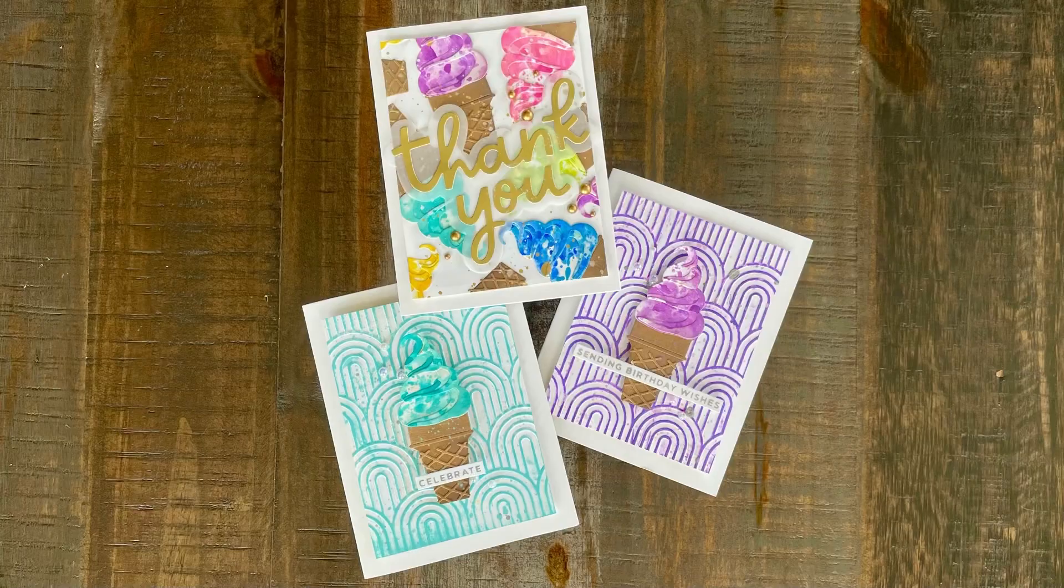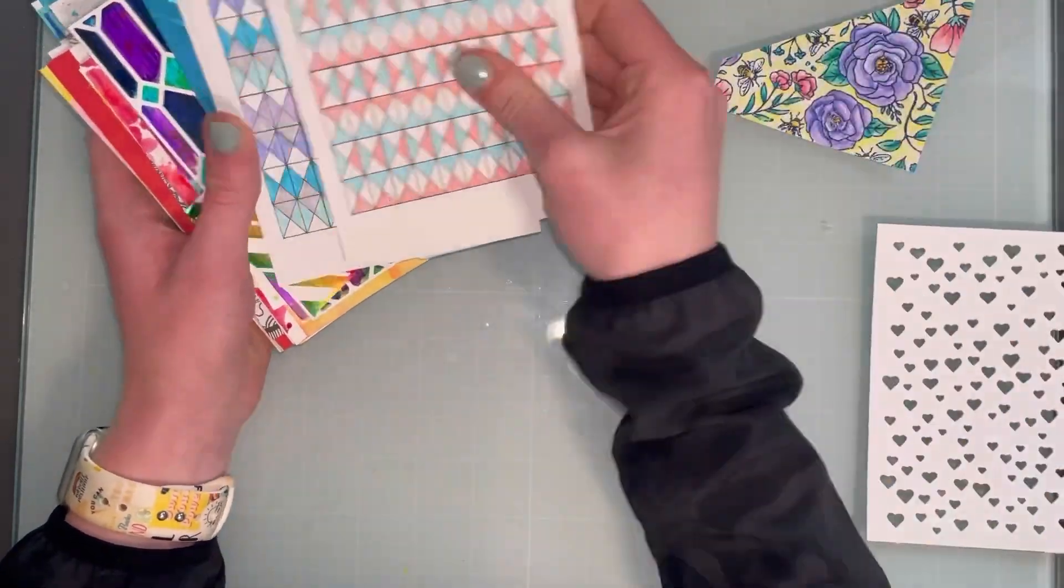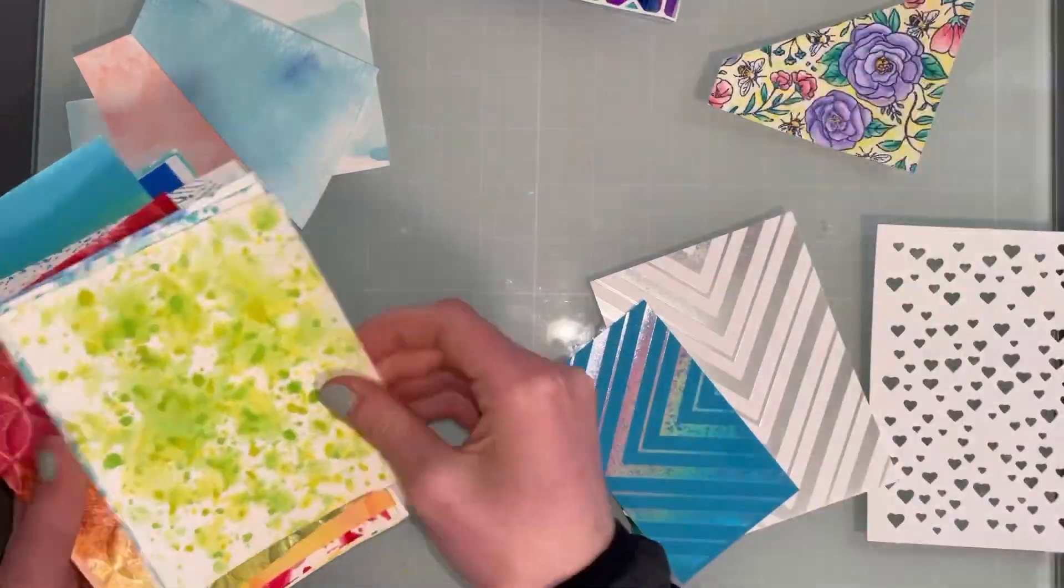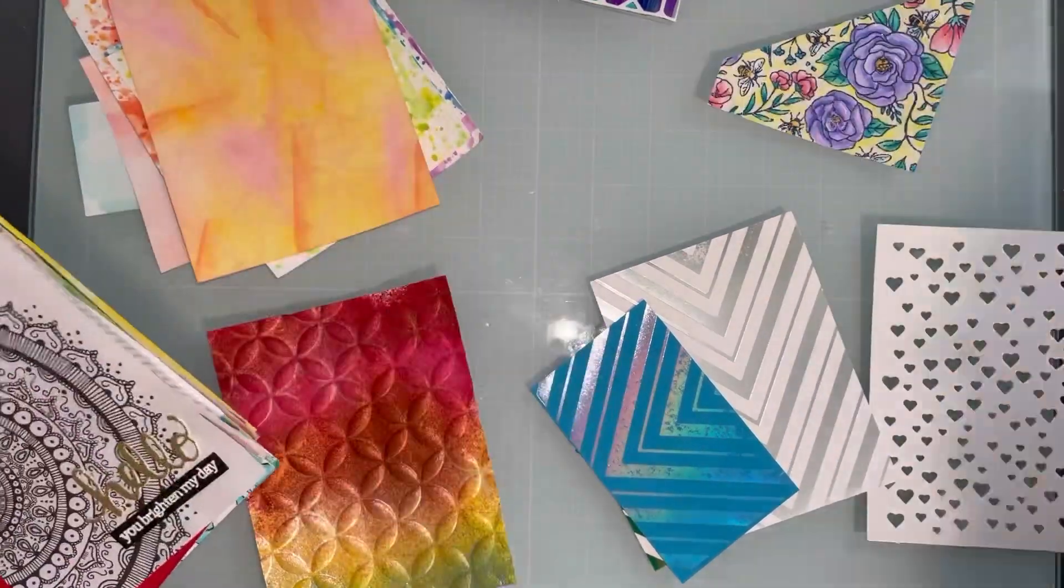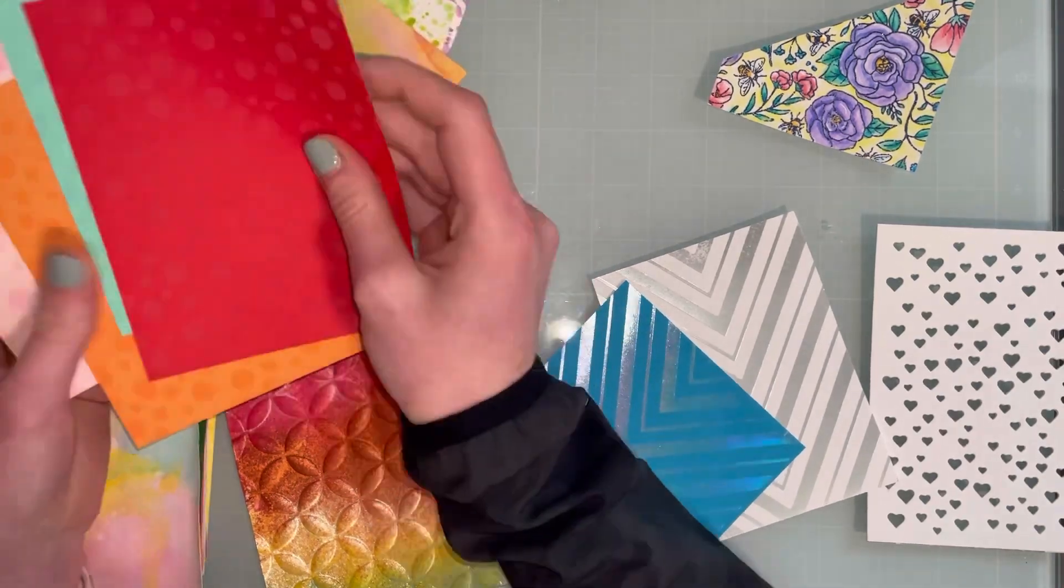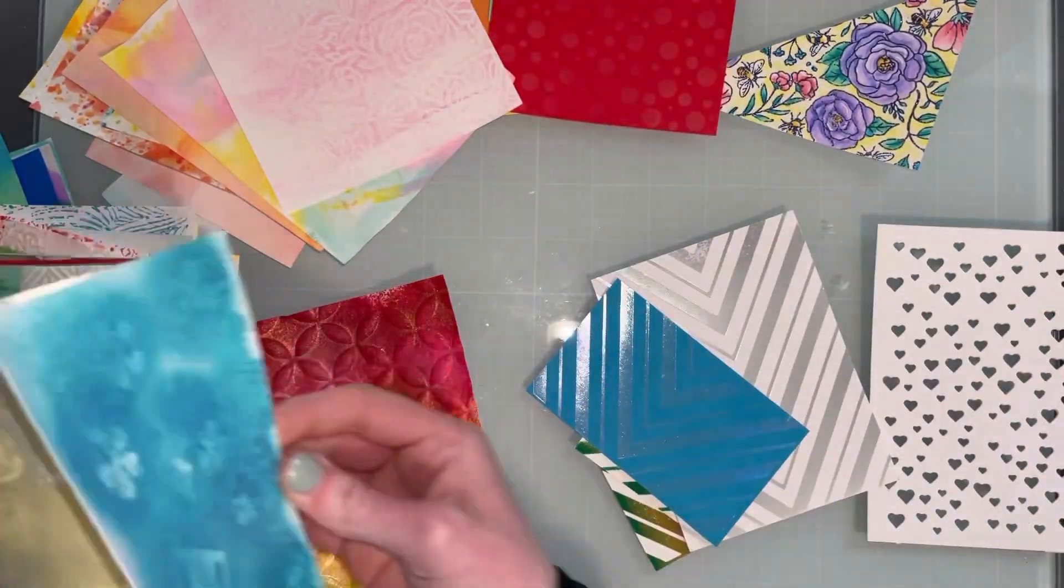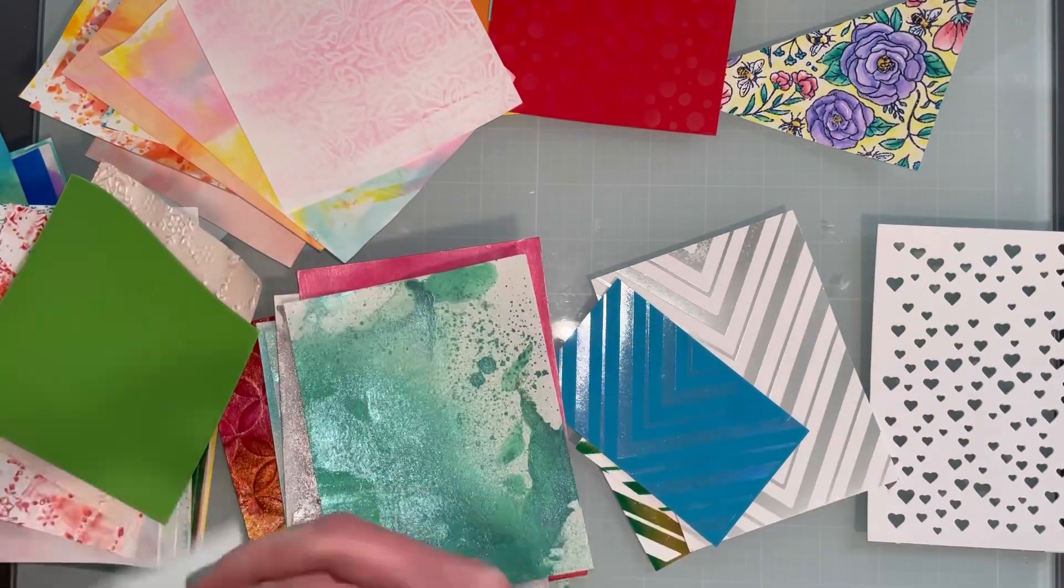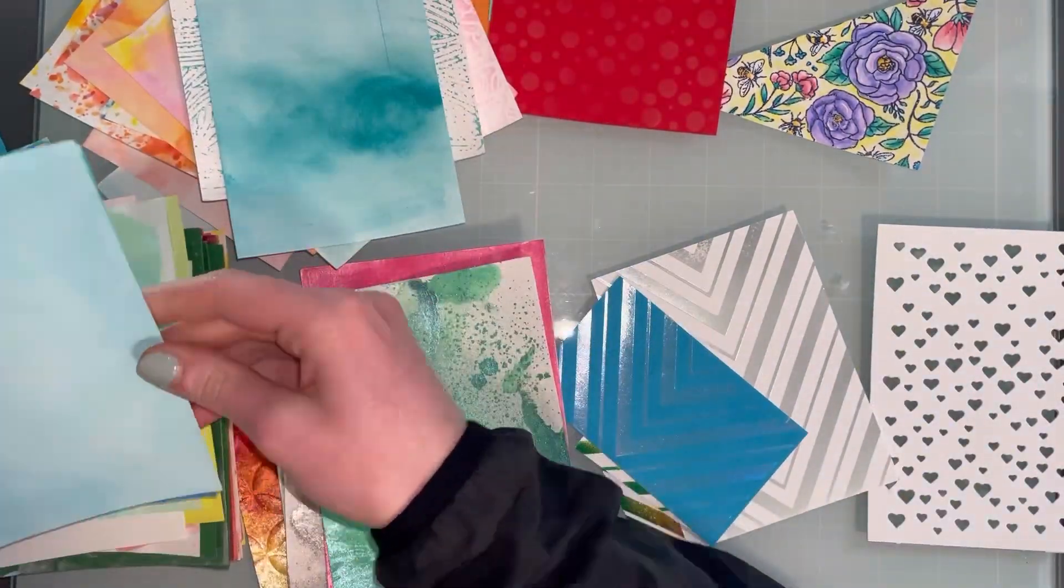So here are the cards we will be making today and I had just this whole box. This box is from Simon Says Stamp, it's actually really great for holding backgrounds, but this box was full of backgrounds that just have been sitting in here because I haven't really found any way to use them. I have sorted them out into some different piles here to help me kind of get a feel for what I want to use.